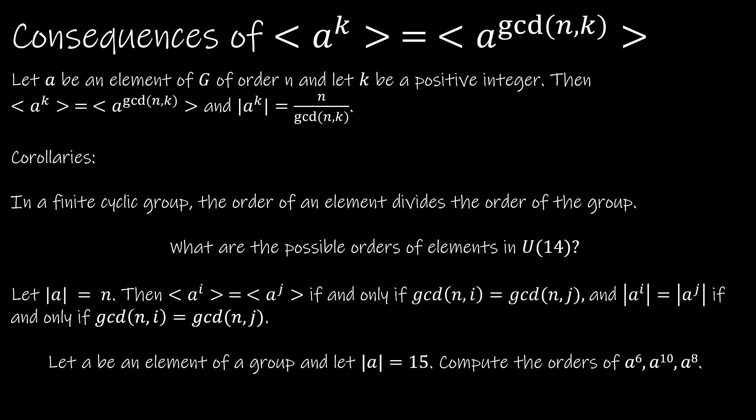This particular theorem has four corollaries, and we're going to look at two at a time. The first one says that if we have a finite cyclic group, the order of an element divides the order of the group. The order of the element tells us how many times we have to perform an operation to get back to the identity; the order of the group is how many elements are in the group. U14 contains the elements 1, 3, 5, 9, 11, 13 — elements less than 14 and relatively prime to 14. So the order of U14 is 6.